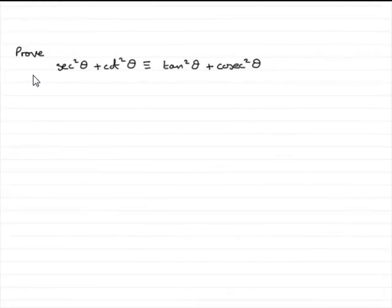Hi. Now in this example, we've got to prove that sec squared theta plus cot squared theta is identical to tan squared theta plus cosec squared theta.